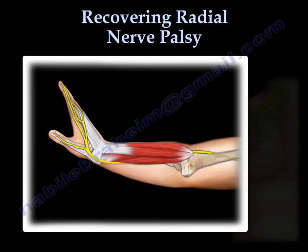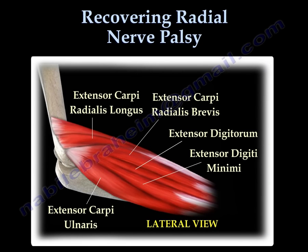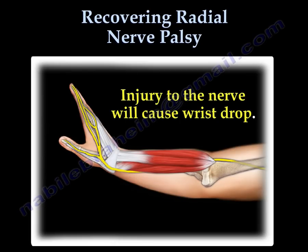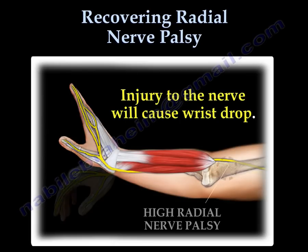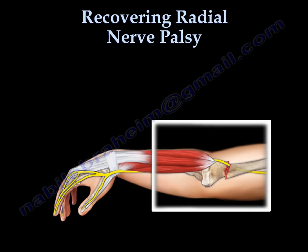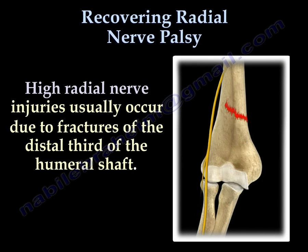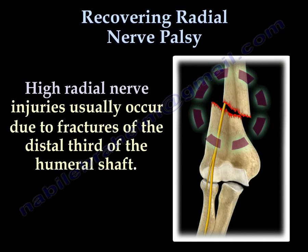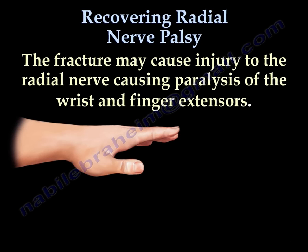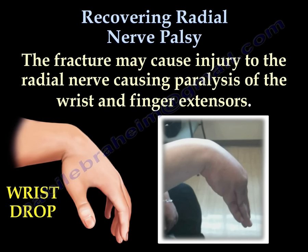Here you can see some of the muscles innervated by the radial nerve. That is why high radial nerve palsy will cause wrist drop. It usually occurs from fractures of the distal third of the humeral shaft. The fracture may cause injury to the radial nerve, resulting in paralysis of the wrist and finger extensors.